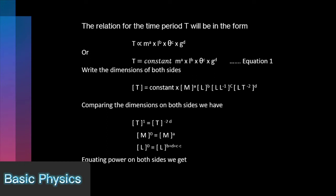Compare the dimensions on both sides. For T: 1 equal to -2d. For mass: 0 equal to a. For length: 0 equal to b plus d plus c minus c.